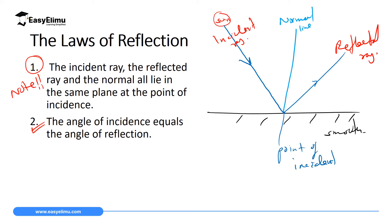This law states that the incident ray, the normal line, and the reflected ray all lie on the same plane at the point of incidence. If you don't observe this law, then the second law will not exist.